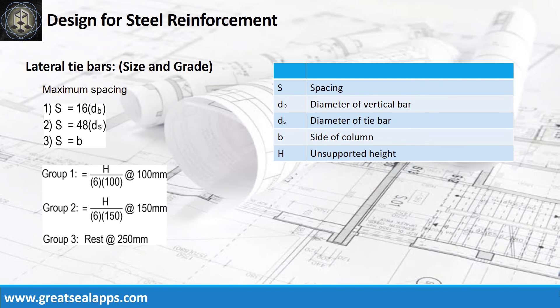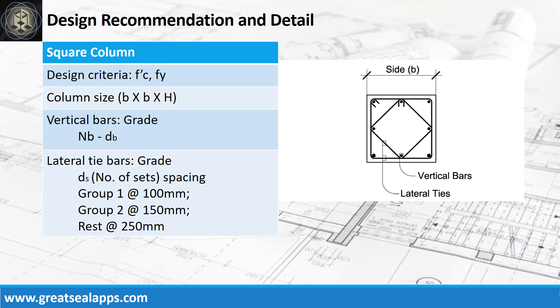Follow the given computations for lateral tie bars. The design recommendation format is as follows: design criteria, column size, vertical bars, and lateral tie bars.